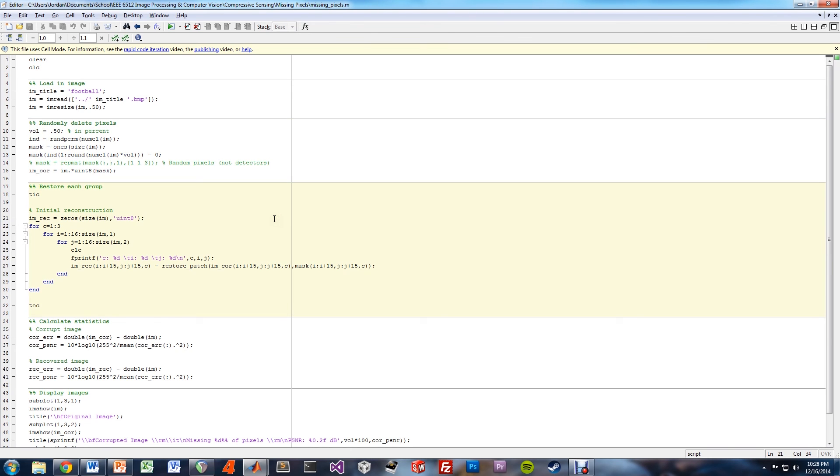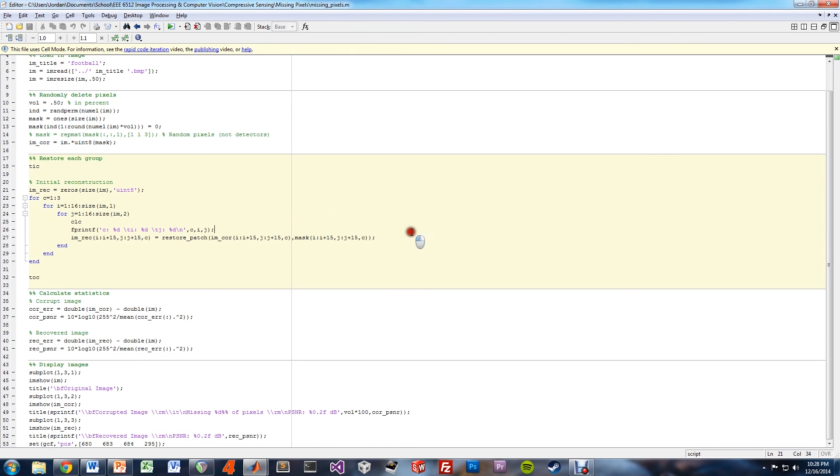So once you've corrupted the image, you do the same sort of L1 minimization. This goes through, breaks the image up into 16 by 16 pixel blocks, and then passes each block to the restore patch function we went over a second ago. It then takes all of the restored patches, stitches them together, we calculate a couple different error metrics, and then display the results with this code right here.